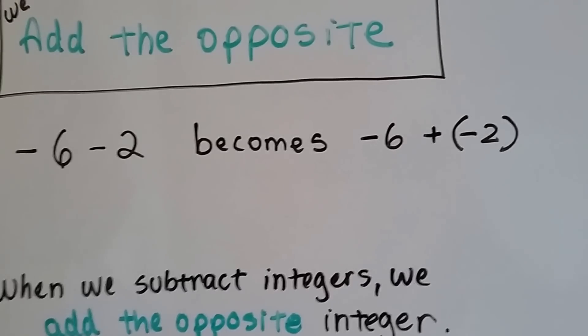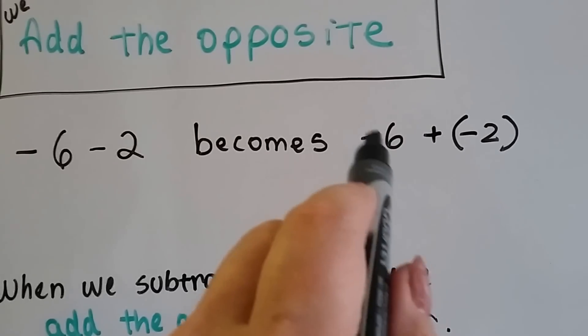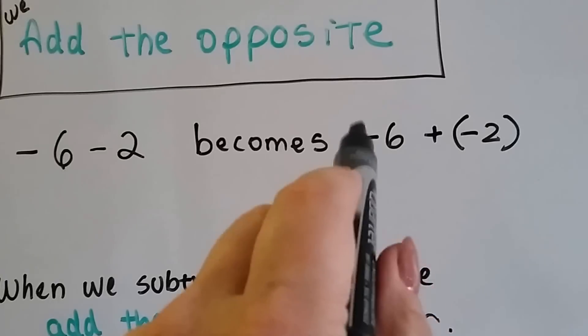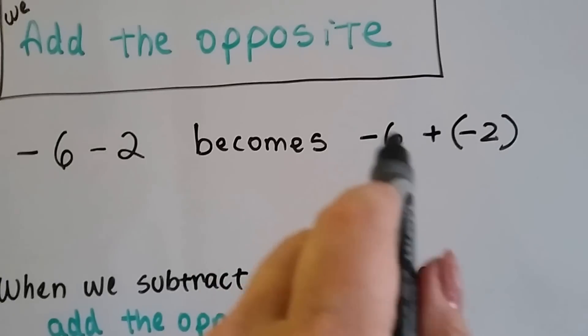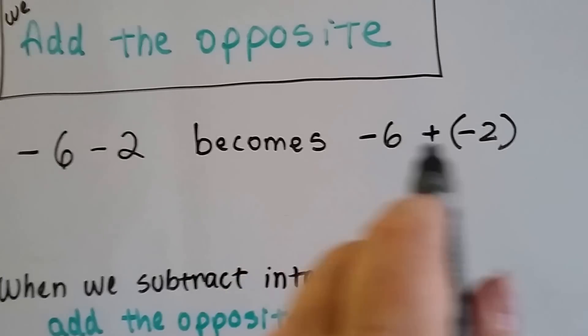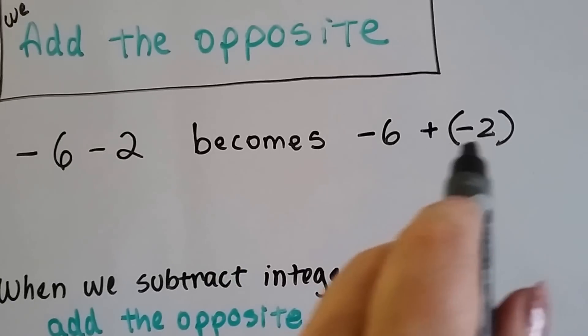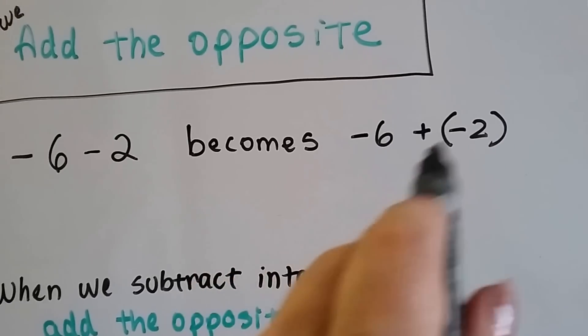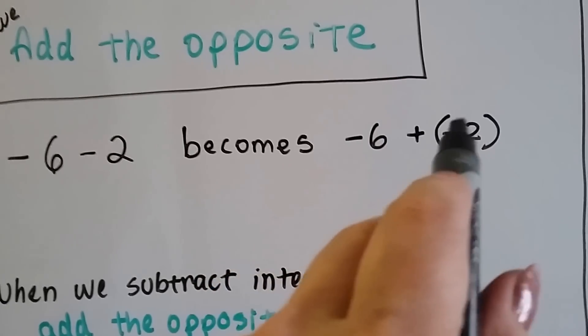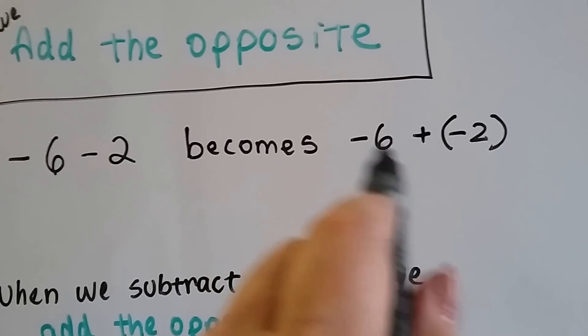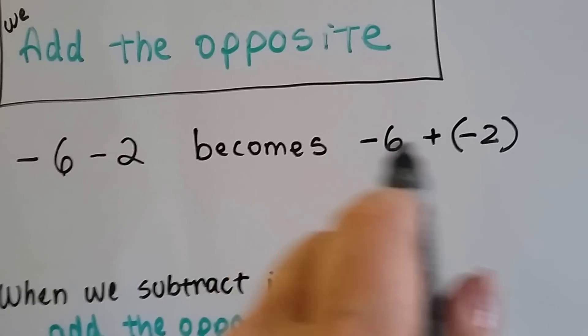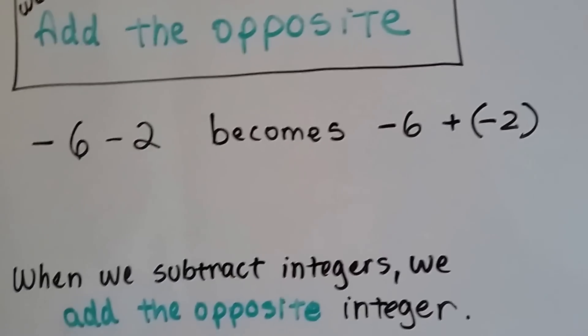We know how to do that from the last video. When the signs are the same and we're adding, we just add them together. 6 plus 2 is 8, and we take the sign of the shared like-signed addends. So it's a negative 8.